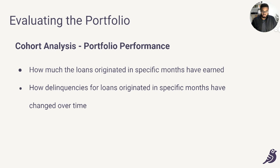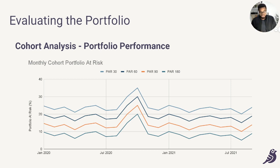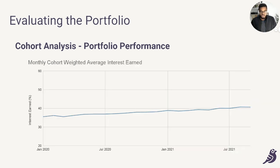Lastly, to get a sense for the portfolio performance on a cohort basis, we want to understand how much the loans originated in specific months have earned and how delinquencies for loans originated in specific months have changed over time. Here we're looking at the weighted average interest earned as well as the portfolio at risk numbers to understand this. We typically request this data from the company and create charts: the first being the monthly cohort portfolio at risk numbers, which show the portfolio at risk for 30, 60, 90, and 100 days for loans based on the specific months they were originated. We're also looking for the monthly cohort weighted average interest earned, which lets us know how much loans originated in specific months have earned over time.